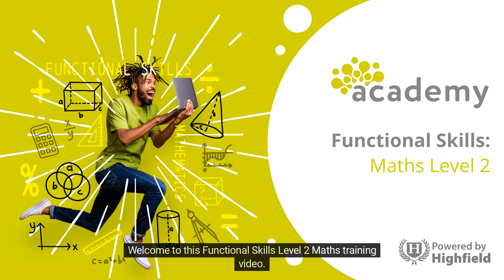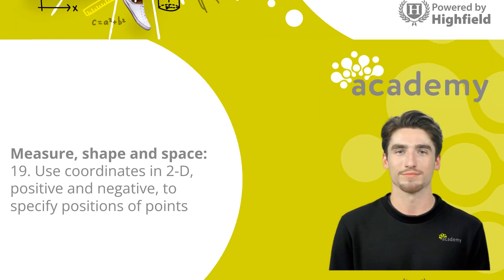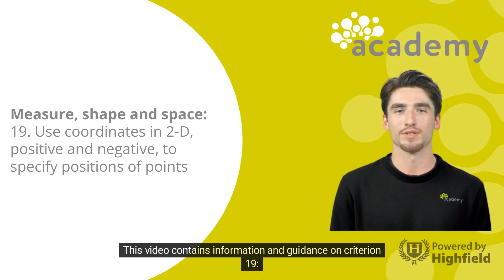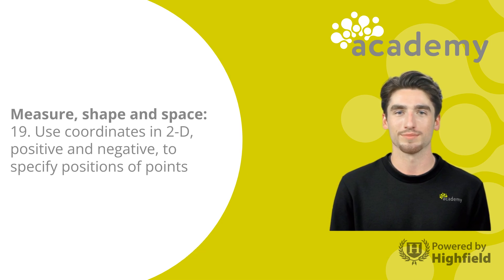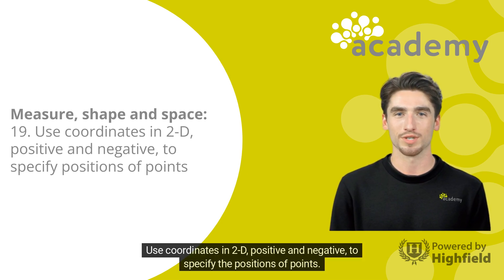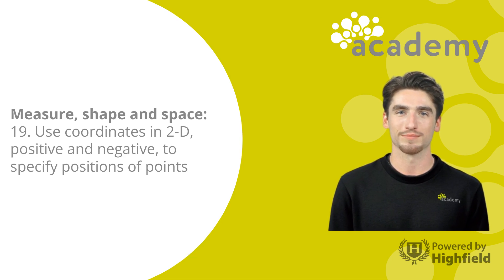Welcome to this Functional Skills Level 2 Maths training video. This video contains information and guidance on Criterion 19: use coordinates in two dimensions, positive and negative, to specify the positions of points.